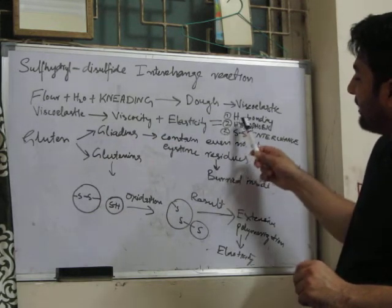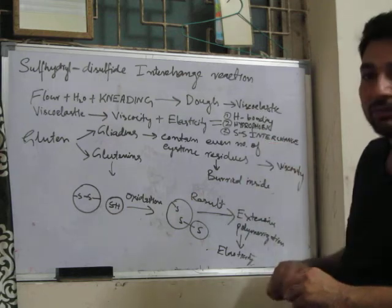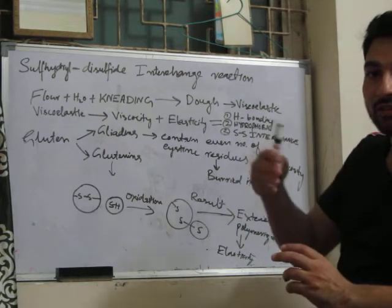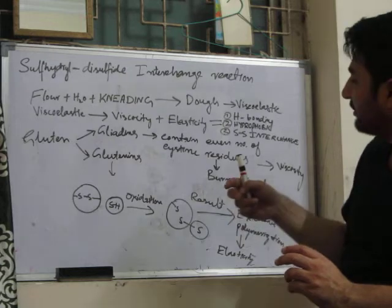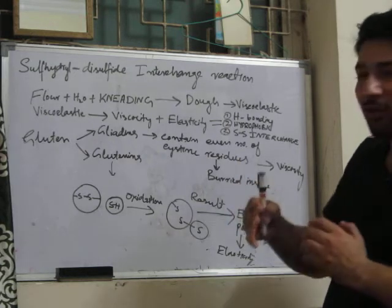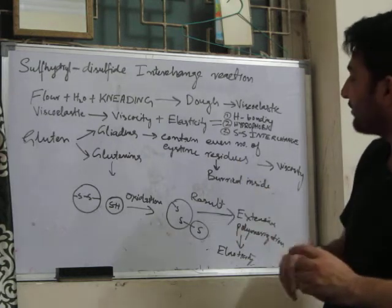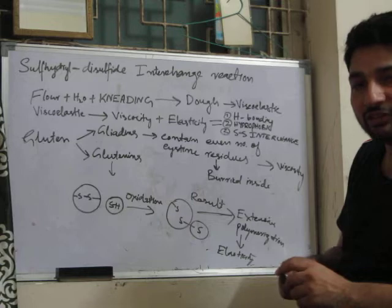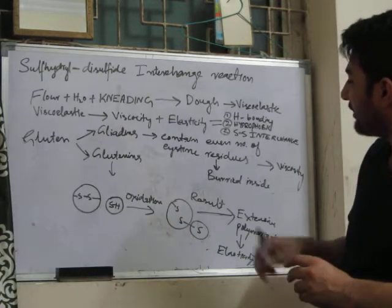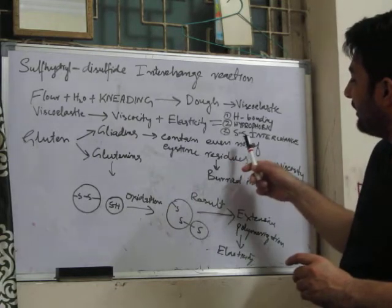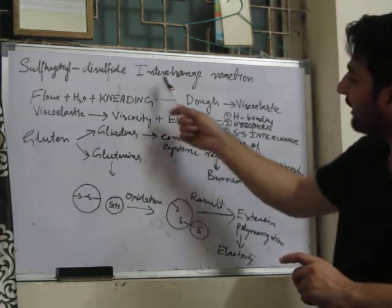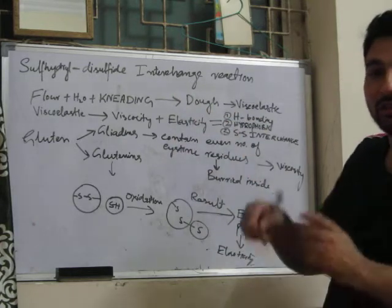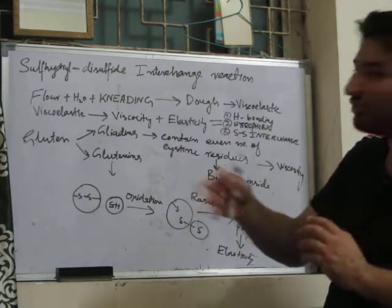These reactions may be hydrogen bonding — the protein chains form hydrogen bonds. They can also form hydrophobic interactions. And there may also be sulphide disulphide interchange reactions between the different protein chains.